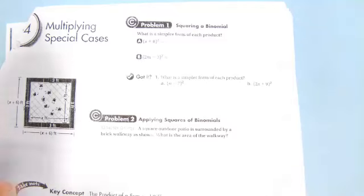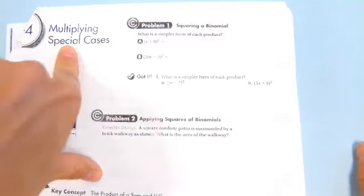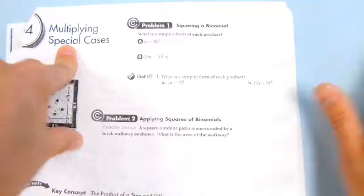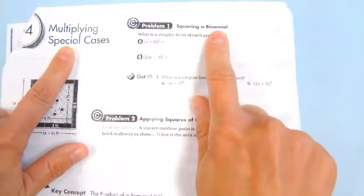Today we're going to do 8-4 multiplying special cases. We're going to start with squaring a binomial.